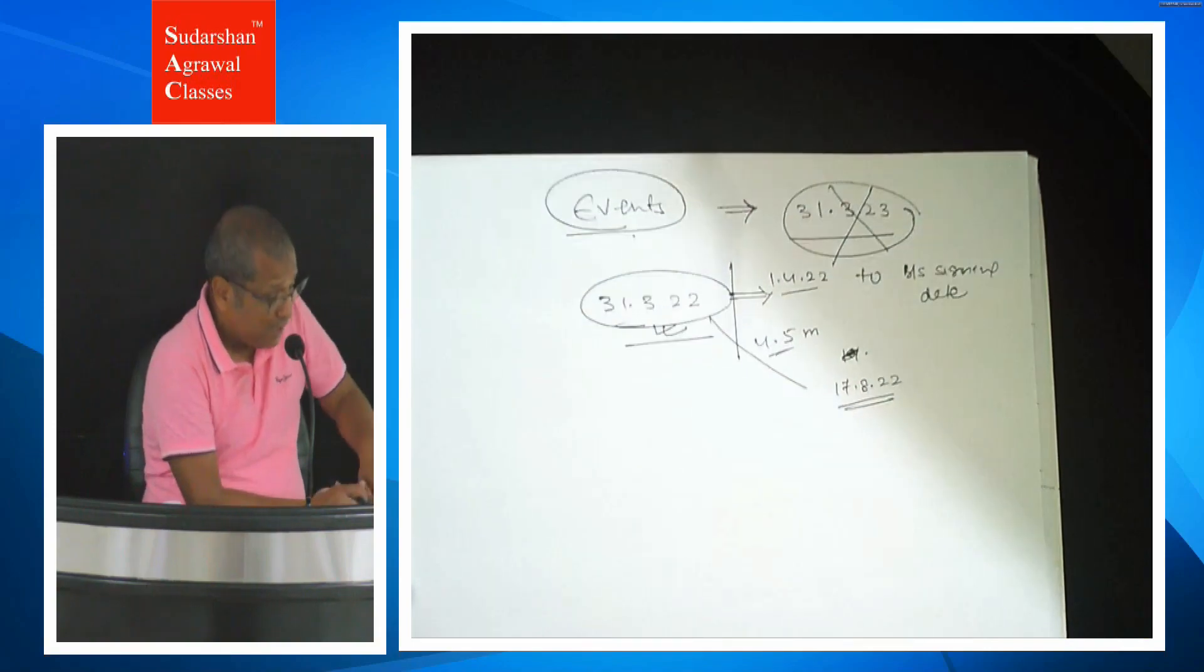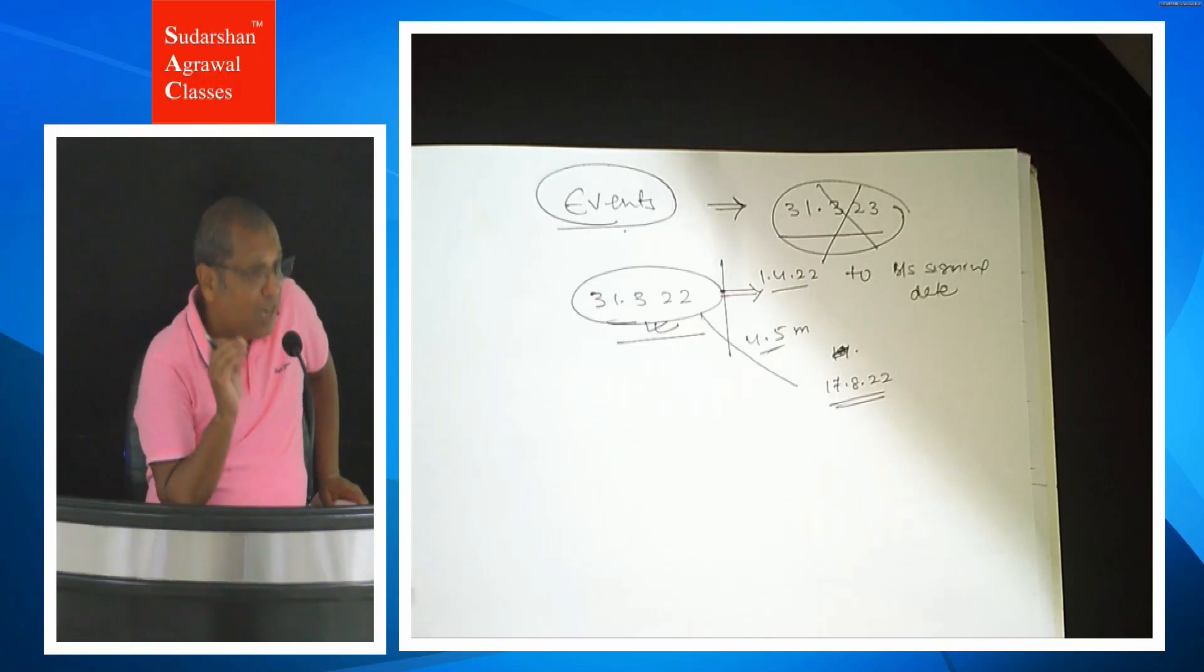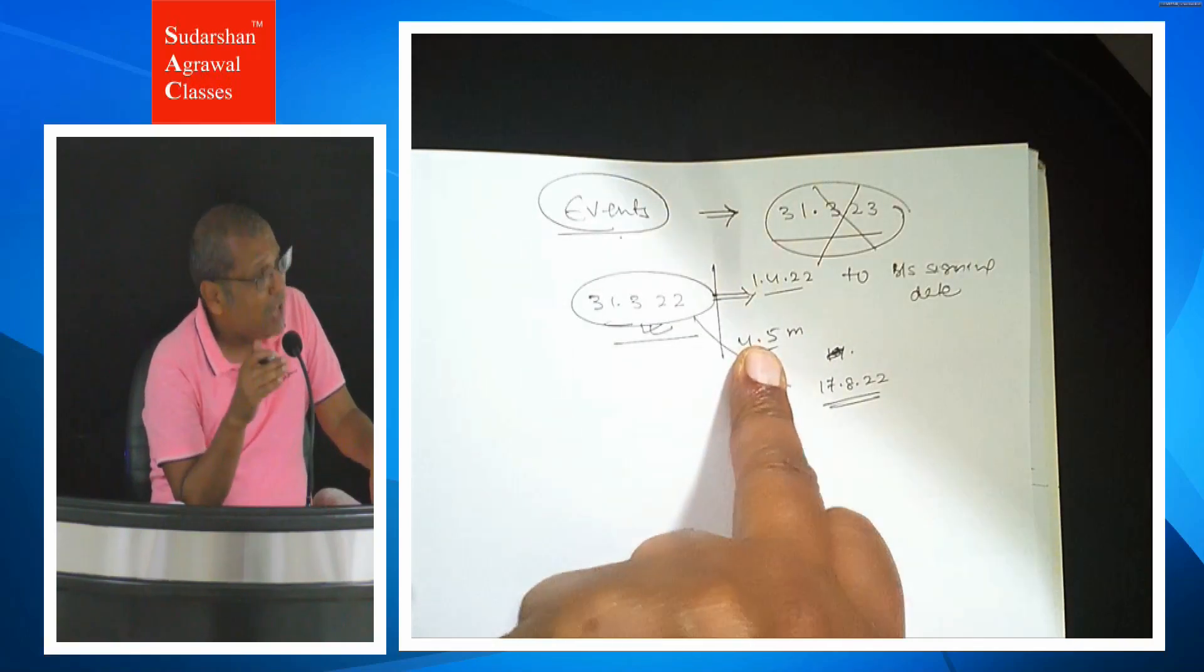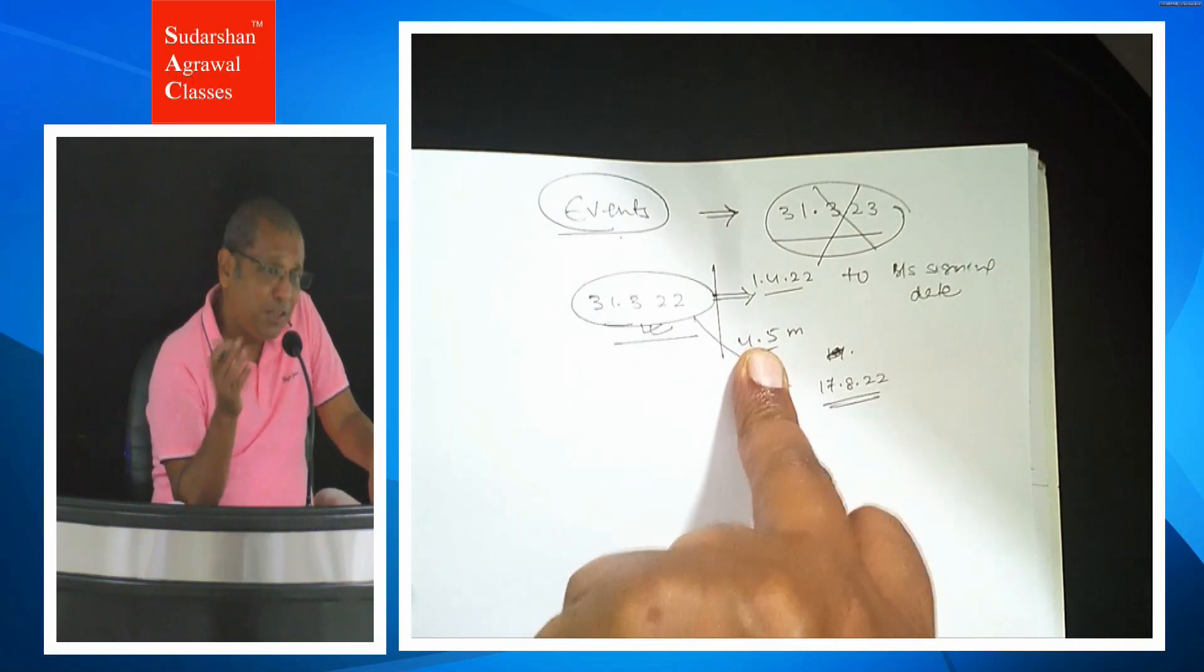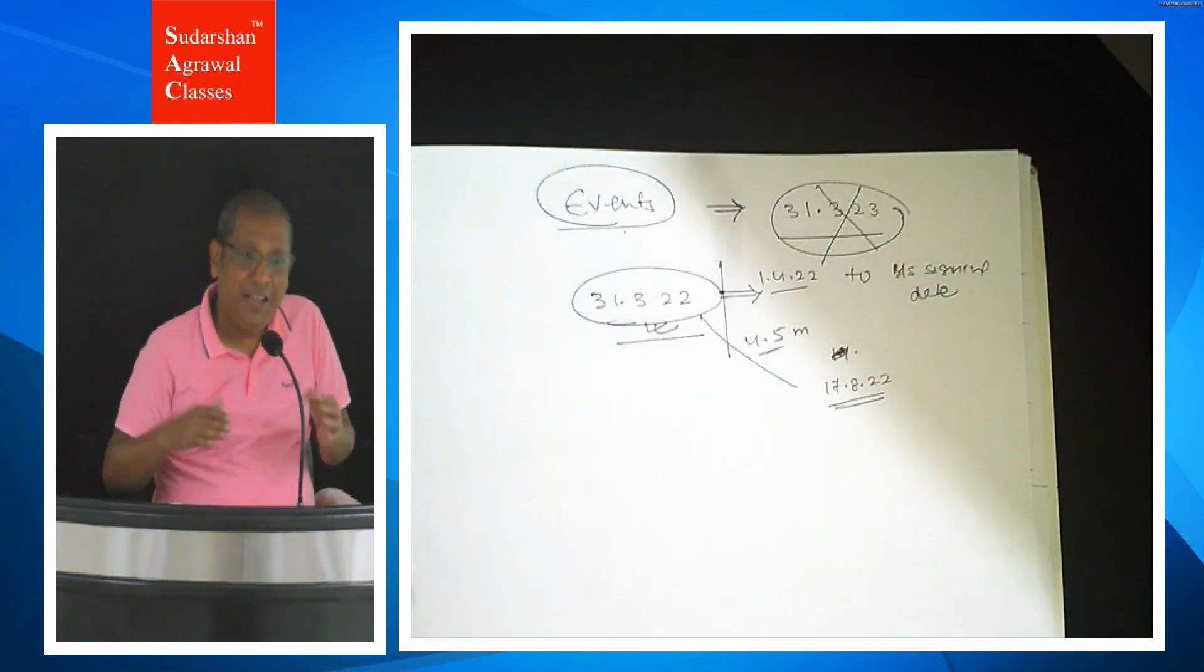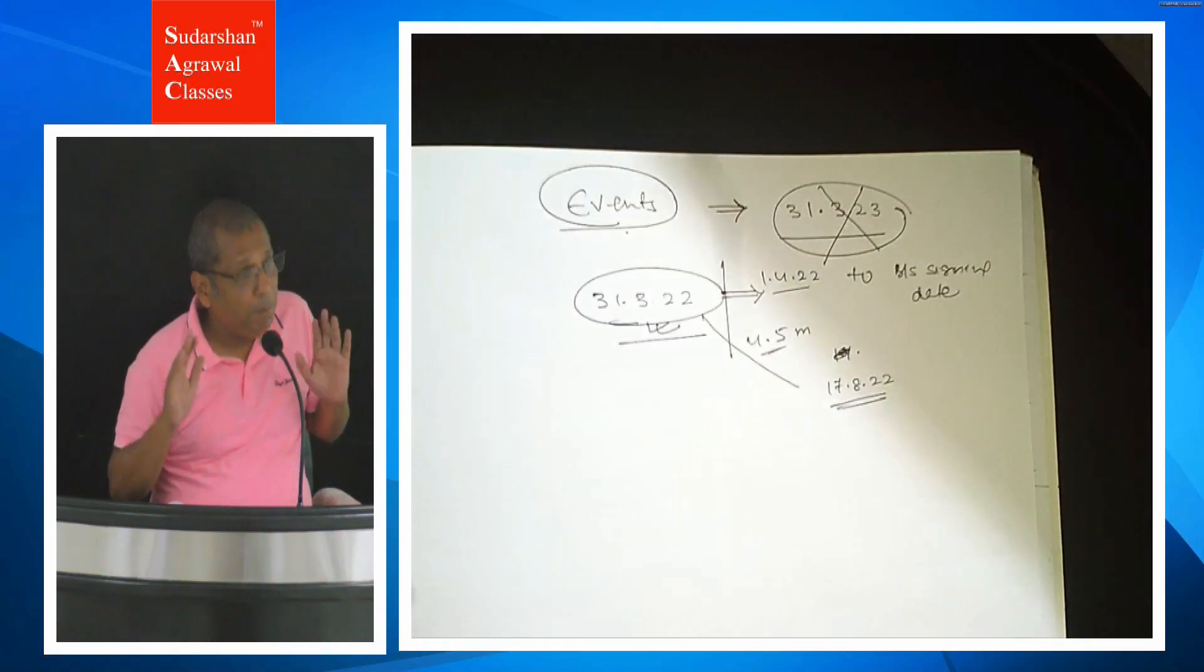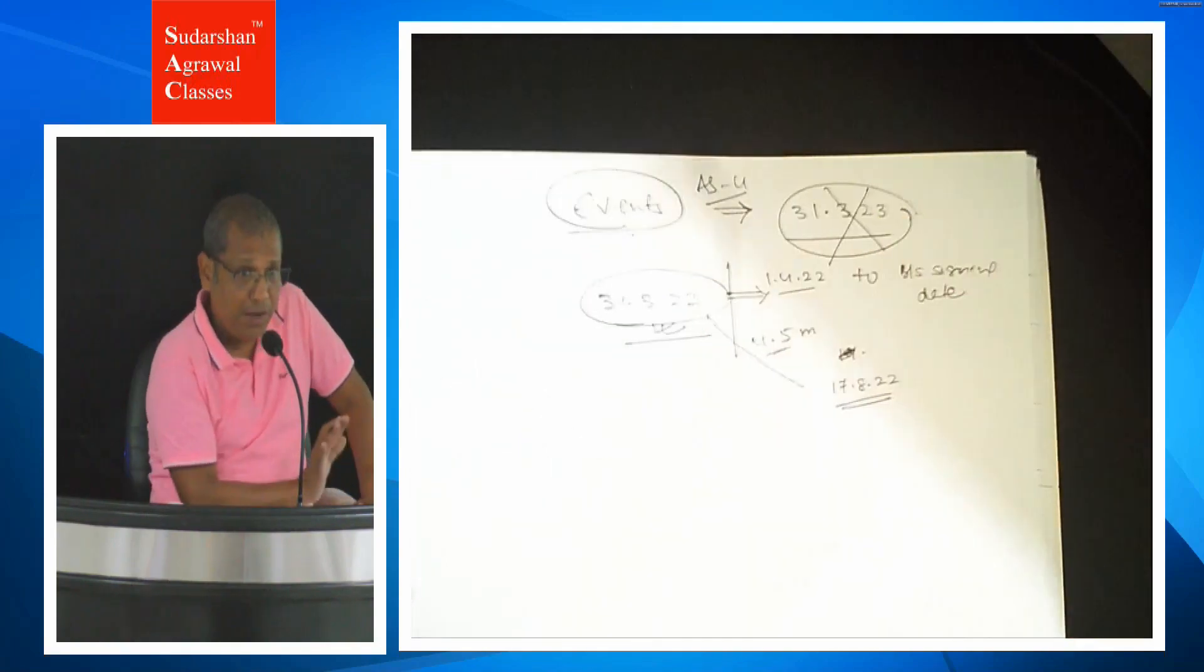This period - in this period, whatever events are obviously accounts related, financial statements related, P&L related, balance sheet related. If there are any events, then we call these events occurring after the balance sheet date. So if we define: any event that takes place after the balance sheet date but before the date of signing of the balance sheet is considered as event occurring after the balance sheet date. Only before the balance sheet signing. Just that event comes under accounting standard 4's purview.